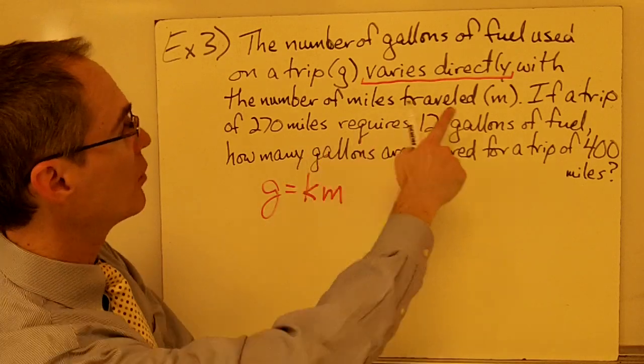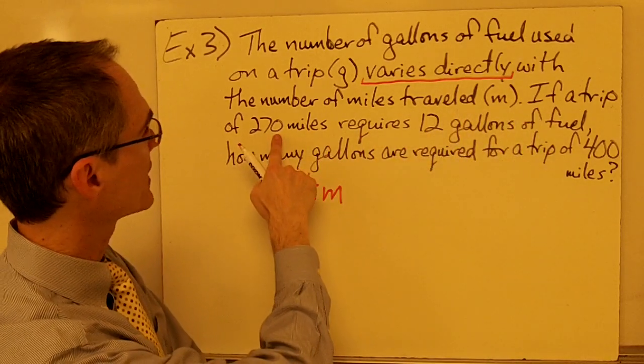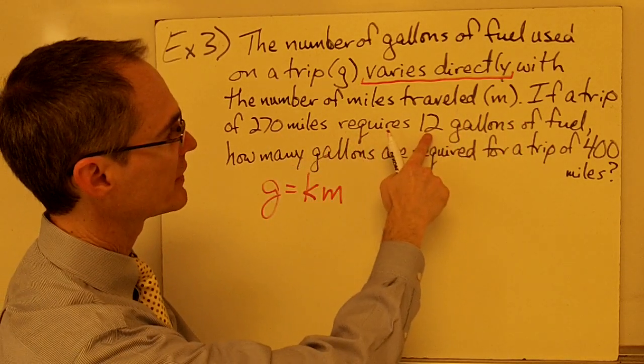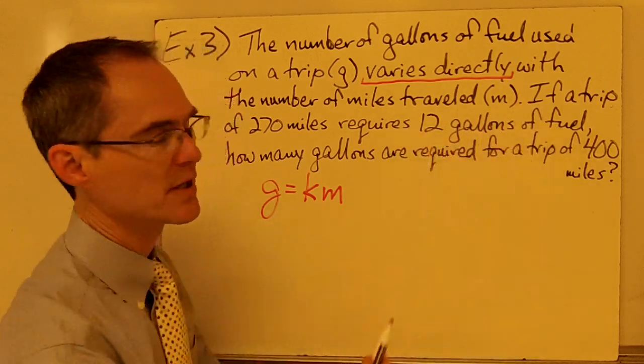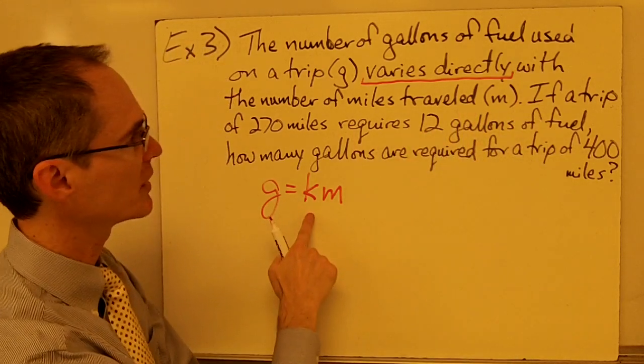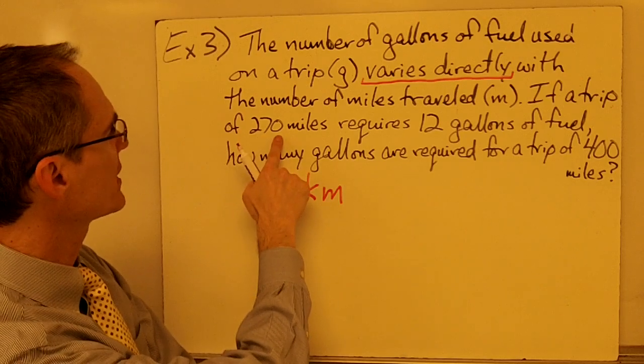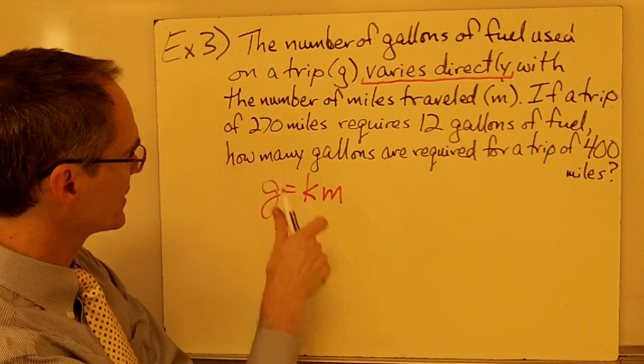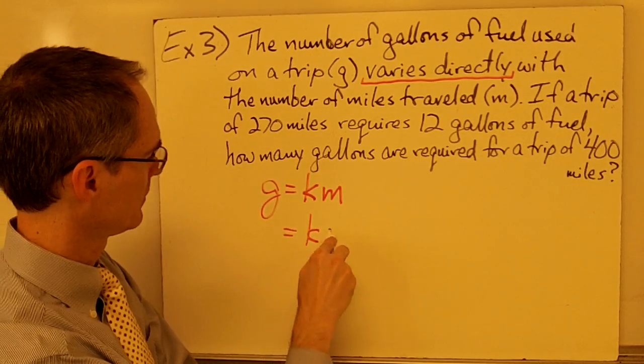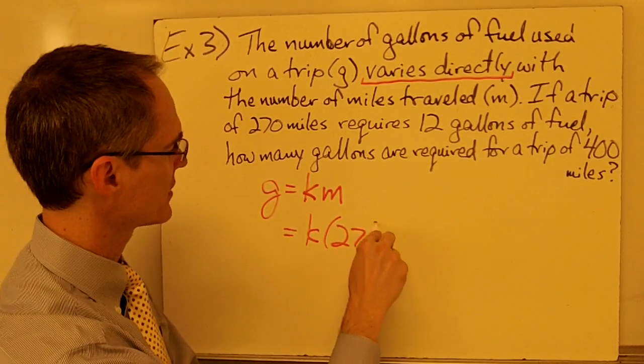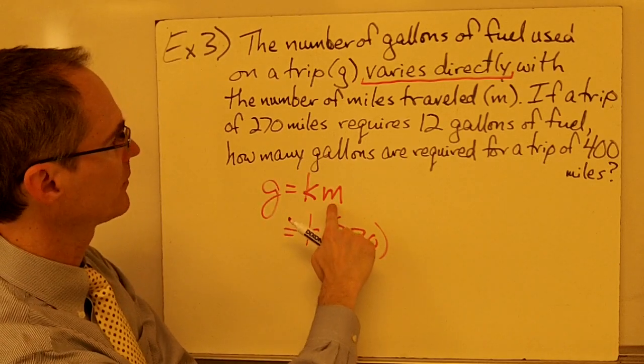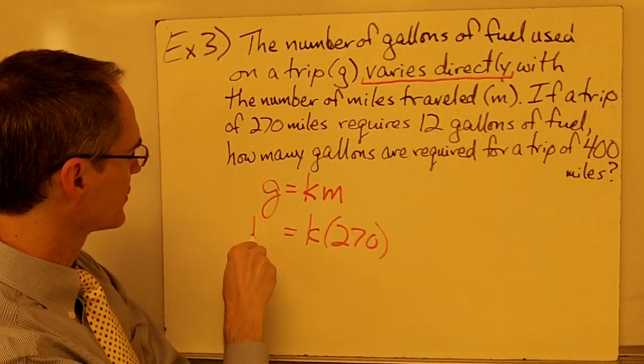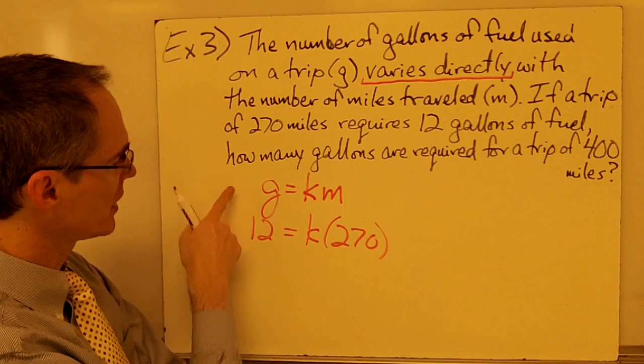And again, I would like to figure out what this value for k is. What's my constant of variation? Well, if a trip of 270 miles requires 12 gallons of fuel, that's my second piece of information. I'm going to use that to determine what k is. So, when my miles driven is 270, that gets substituted in here for miles driven, and that's going to take 12 gallons of fuel. So, that 12 goes in here for g.